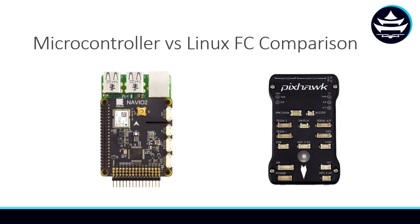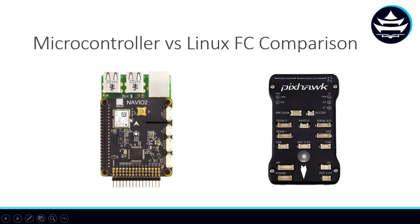Now we're going to do a microcontroller versus Linux flight controller comparison. In this corner, weighing 62 grams, we have the Navio and Raspberry Pi combo. And in this corner, we have the 38 gram Pixhawk. So Navio is our Linux example and Pixhawk is our microcontroller example.